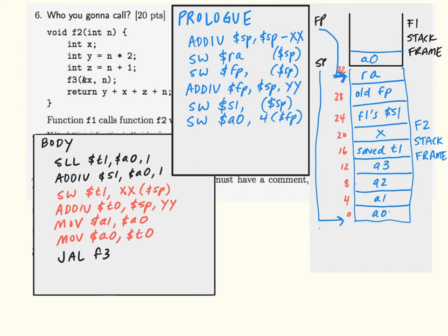Now that we've done this calculation, we can see that our stack frame needs to be 36 bytes in size. So we're going to decrement the stack pointer by 36. We're going to store the return address at 32 bytes offset from the stack pointer. We're going to store the old frame pointer at 28 offset from the stack pointer. The frame pointer is going to be 32 bytes higher than the stack pointer. F1's S1 will be stored 24 bytes from the stack pointer.